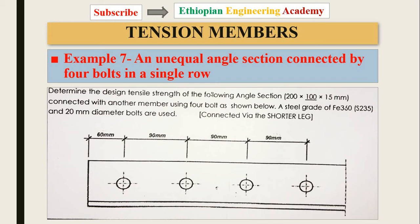We have seen more examples in the previous videos — if you haven't seen them, please go and watch those first and then come back. This is the final part for tension members on working examples. Example seven: an unequal angle section connected by four bolts in a single row.